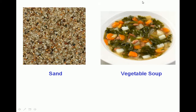More everyday examples of heterogeneous mixtures include vegetable soup, trail mix, or pizza. We can visibly see that there are different phases — a solid phase and a liquid phase. Additionally, a sample taken from one region might yield a piece of potato, while a sample from another region yields a piece of carrot. The composition varies by region, so we classify these as heterogeneous mixtures.